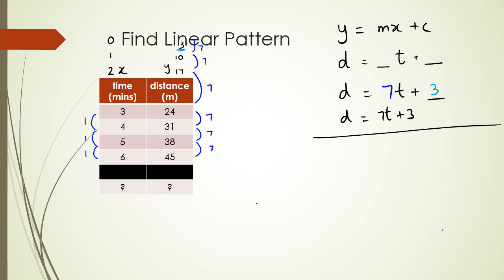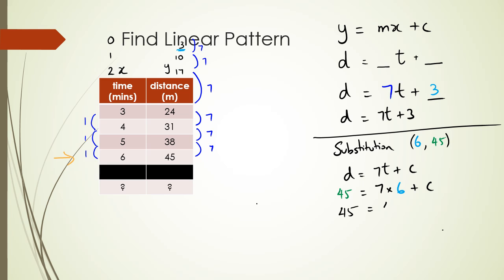I'll verify using substitution. Using the point (6, 45) from the table and substituting into d = 7t + c: 45 = 7 × 6 + c, which gives 45 = 42 + c, so c = 45 − 42 = 3. This confirms the equation is d = 7t + 3 — the same result as the table extension method.